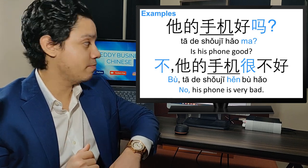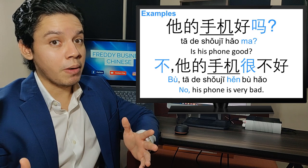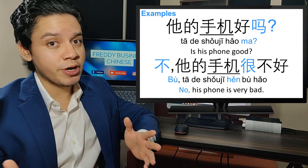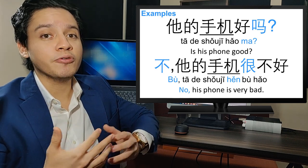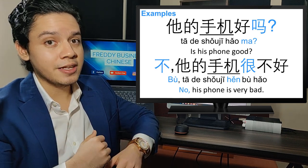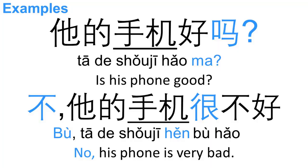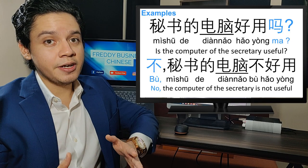We have the same question: 他的手机好吗? — Is his cell phone good? But now the answer is: 他的手机很不好 — We have 很, which adds another degree of intensity. 很不好 means it's not very good — so it's very bad.